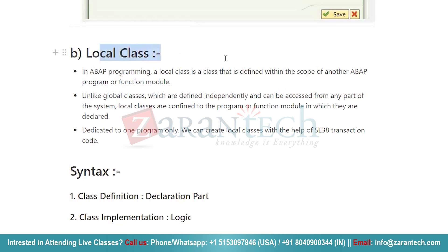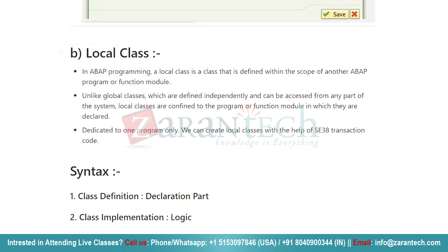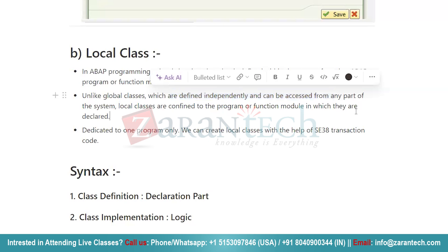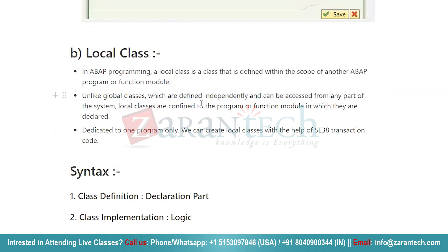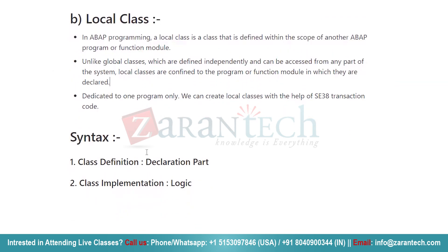The second type of class is the local class. Local classes are created through the ABAP editor, that is from SE38 transaction code. A local class is a class defined within the scope of another ABAP program or function module — you cannot call a local class from another program. Unlike global classes which are defined independently and accessible from any part of the system, local classes are confined to the program or function module in which they are declared. We can create local classes with the help of SE38 transaction code.